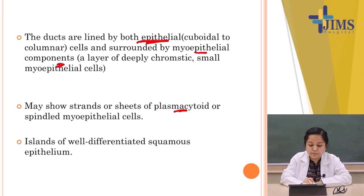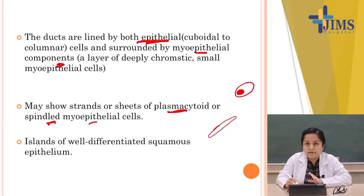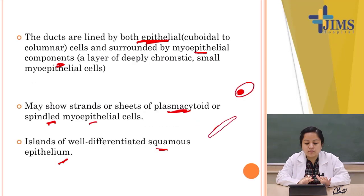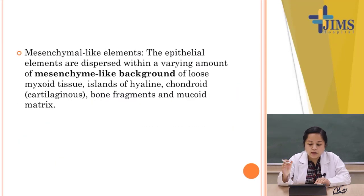The ducts are lined by epithelial cells surrounded by a myoepithelial component. Plasmacytoid or spindle myoepithelial cells can also be seen. Spindle cells are elongated; plasmacytoid cells look like plasma cells — larger with a peripherally placed nucleus. Squamous epithelium can sometimes be seen as well.